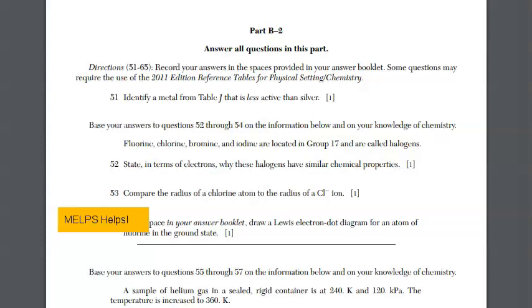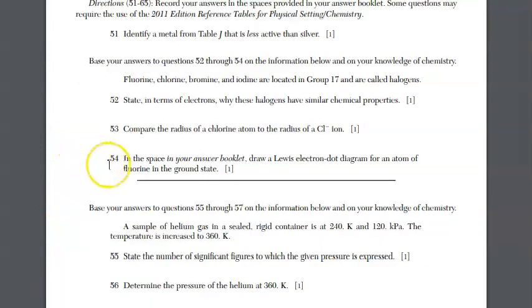In question 53, we're going to compare the radius of a chlorine atom to a radius of a Cl- ion. A chloride ion, the reason why you see the dash, it's gained an electron. Just like me, if I eat too much, I gain weight and get bigger. So do nonmetals as they gain electrons. So the chloride ion has a larger size or radius than the chlorine atom.